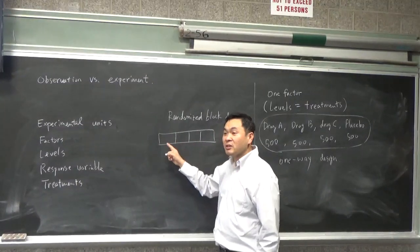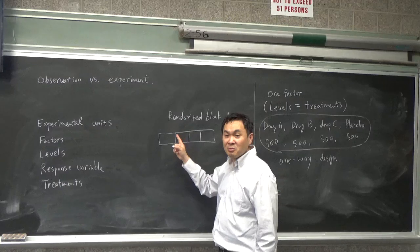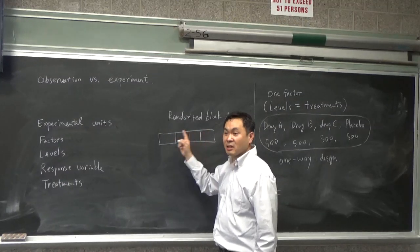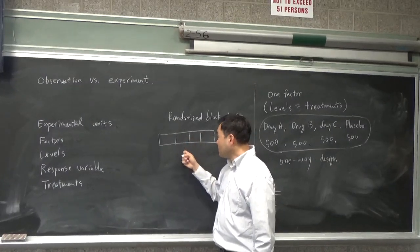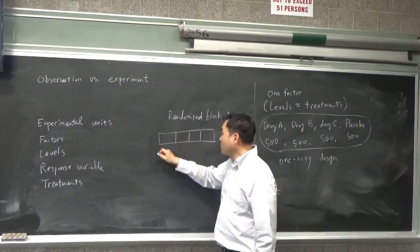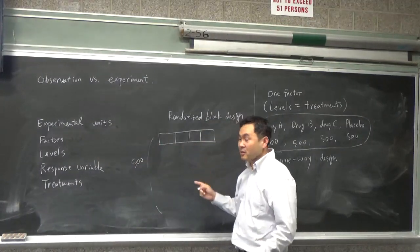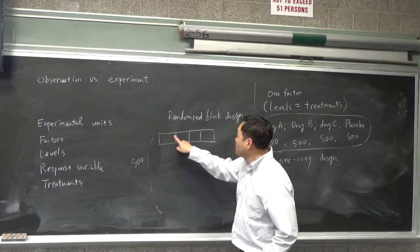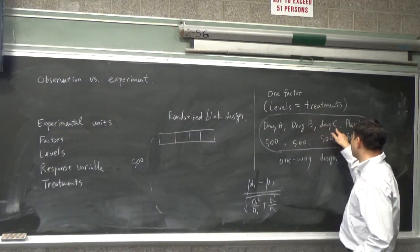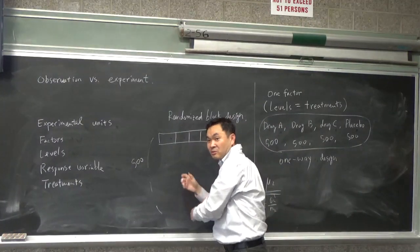Where within one block, people would have similar age, same sex, same race, something like that, okay? And you make these blocks, and you have 500 of these blocks now. Still 2,000 people, right? Where you make 500 of these blocks. And then randomly assign these drug A, B, C, and placebo in different ways. Okay? Just randomly assign.